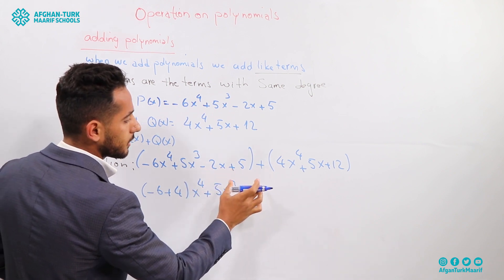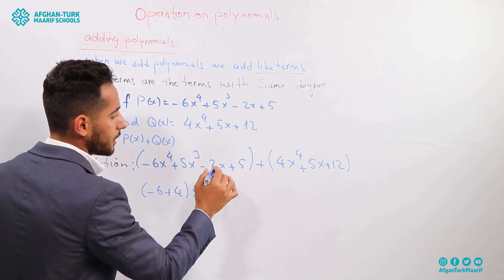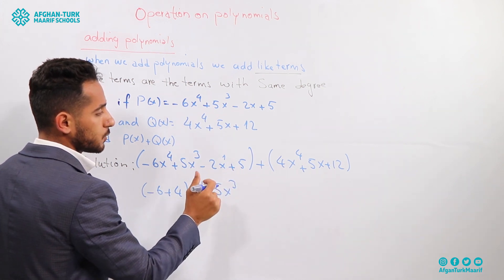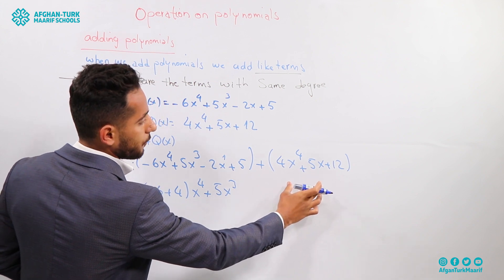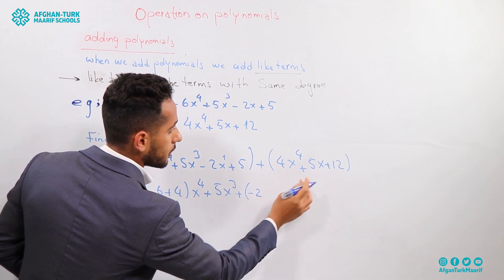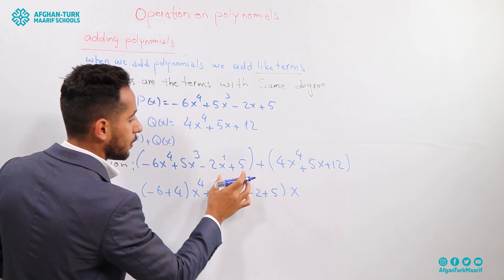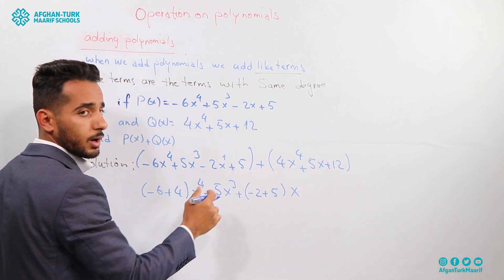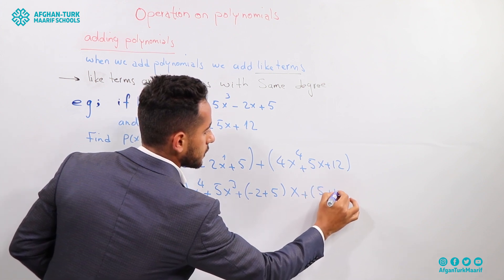Next, minus 2x — the degree of this term is 1 because the power of the variable is 1. Let me check whether there is another term with the same degree. Yes, there is 5x, so we are going to add them: minus 2 plus 5, giving x. We also have two constant terms, 5 and 12, whose degrees are 0, so we can add them: 5 plus 12.